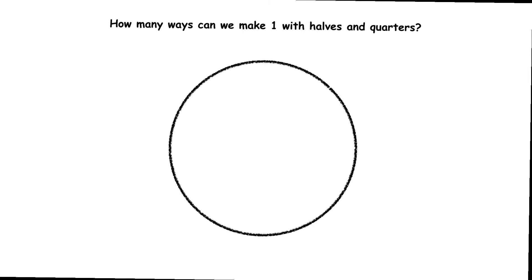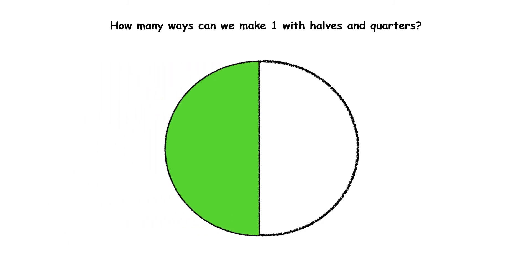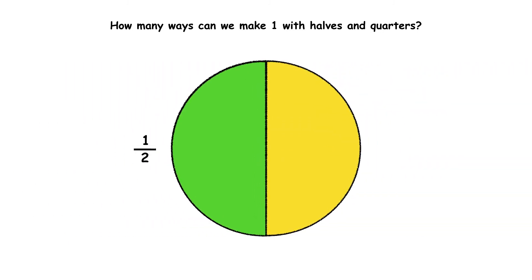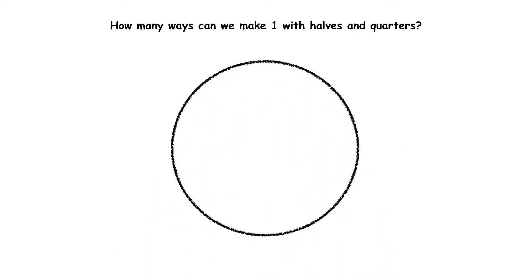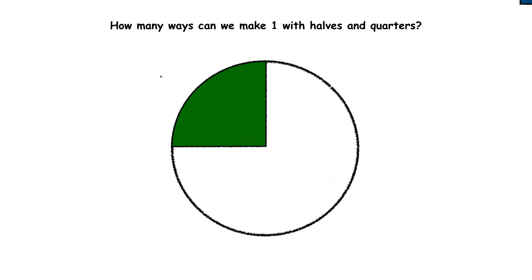How many ways can we make one with halves and quarters? We could have two halves. We could have four quarters.